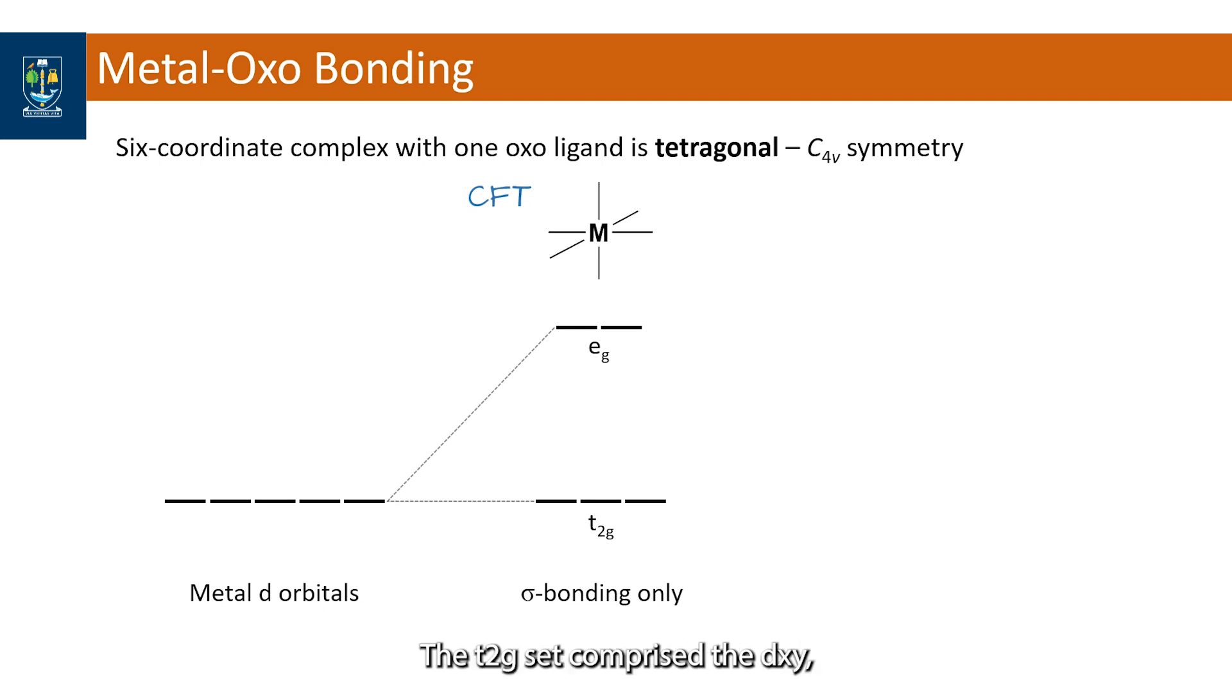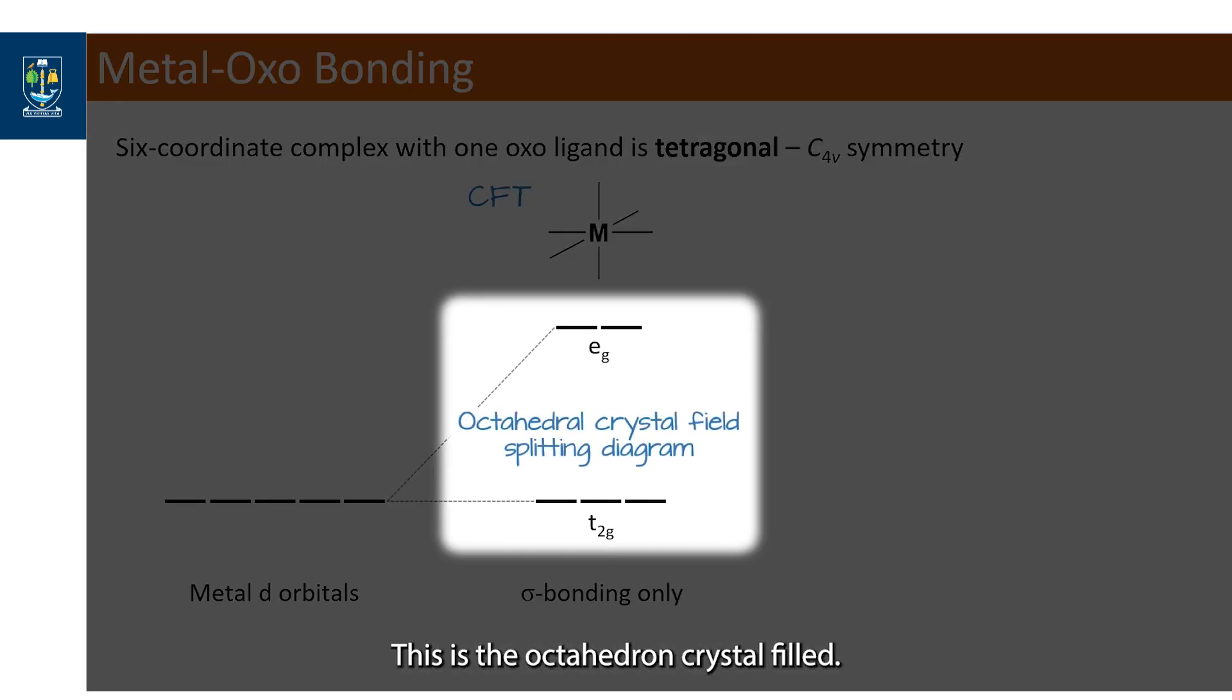The t2g set comprise the dxy, dxz and dyz orbitals that project into the space between ligands. This is the octahedral crystal field.